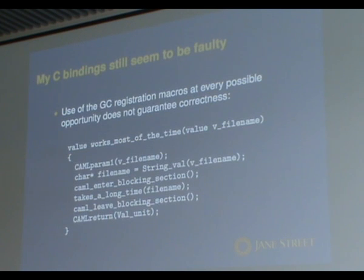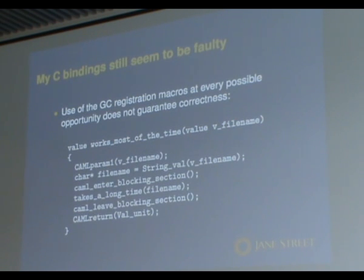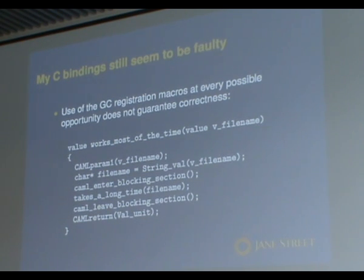People often say that if you use all the registration macros correctly everything's fine, but that's not the case at all. If you just do that blindly you can end up not thinking carefully enough about what's going to go wrong. For example, here's an apparently innocuous function that takes a string, gets the pointer out, calls some C function without the runtime lock, then returns. The problem is that the char pointer actually points into the OCaml heap value. Strings in OCaml are unusual in that a lot of the data is directly in the heap value. So the garbage collector can run, move the value, and now your pointer is dangling. You have to be very careful about aliasing that data.